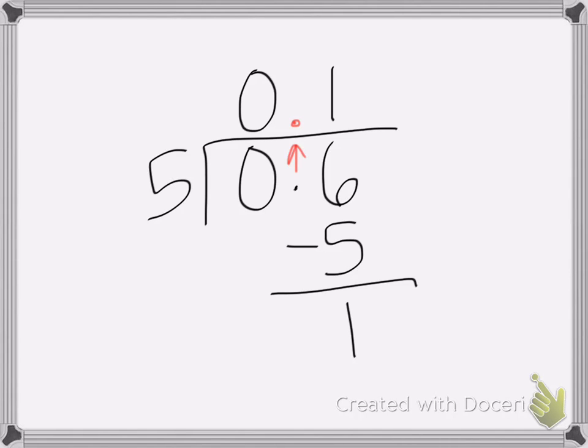We subtract and get 1. Now you cannot have a remainder with a decimal. So to fix that problem, we continue to add zeros after my number. Remember, no matter how many zeros I add, it will not change the answer.